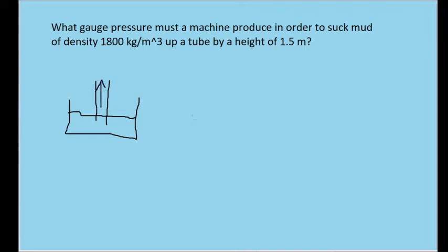The way machines like this work is they reduce the internal pressure inside the machine so that the atmospheric pressure from outside pushes down on the mud and pushes it up into the tube. This is how things like straws work.